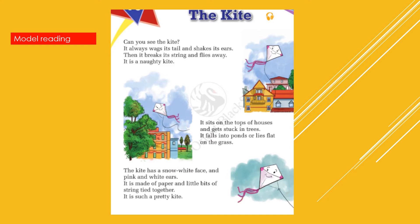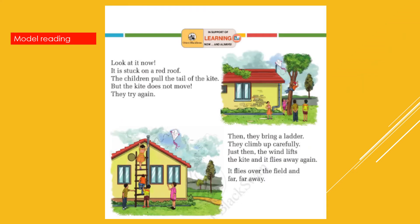The kite has a snow white face and pink and white ears. It is made of paper and little bits of string tied together. It is such a pretty kite. It is stuck on a red roof. The children pull the tail of the kite.